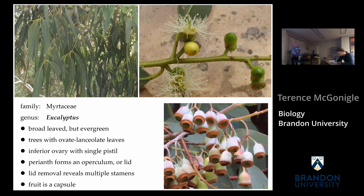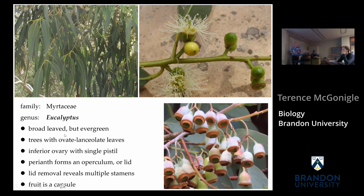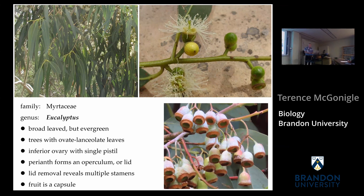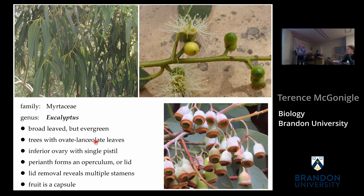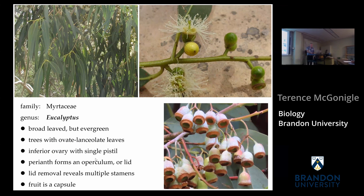Eucalyptus trees are in the family Myrtaceae. They are broad-leaved but evergreen — a little bit unusual, as we're used to seeing trees in North America that are broad-leaved and deciduous. The leaves are lance-shaped, lanceolate, but also sort of egg-shaped at the bottom, widest near the bottom — combining ovate-lanceolate. The female parts are inferior, meaning the seeds are produced below where the flower is, all put together in a single structure.